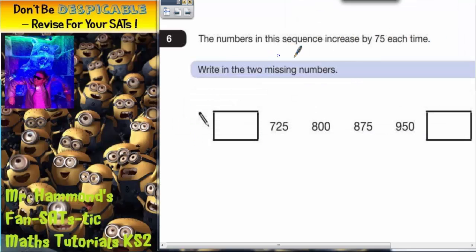Question 6. The numbers in this sequence increase by 75 each time. Write in the two missing numbers.